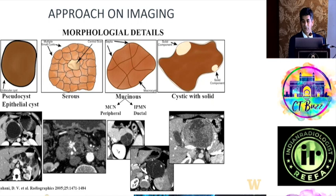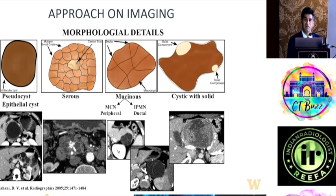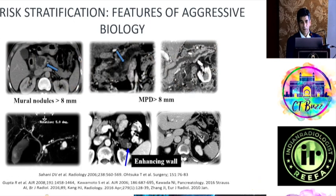Thin wall versus thick wall is the critical differentiation. A thick-walled lesion — even without septations — carries a high likelihood of malignancy. An obvious solid component is also a red flag. Another category is microcystic neoplasm, also called serous cystadenoma, which has very traditional morphology — when in doubt, MRI can characterize these better than CT. Key risk features include mural nodule and main duct dilatation in main duct IPMN.